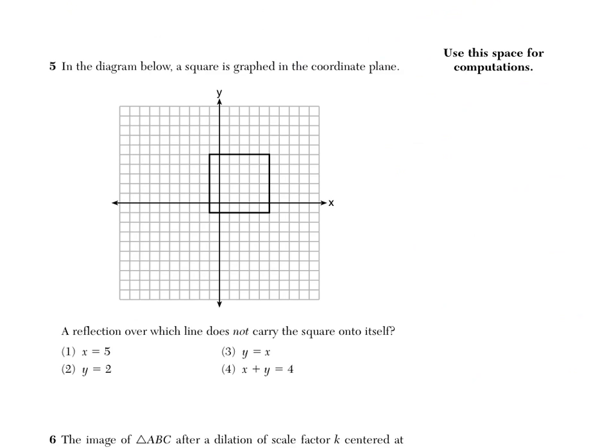Number five says, in the diagram below, a square is graphed in the coordinate plane. A reflection over which line does not carry the square onto itself. Does not carry the square onto itself. Carry onto itself is the same thing as map onto itself.